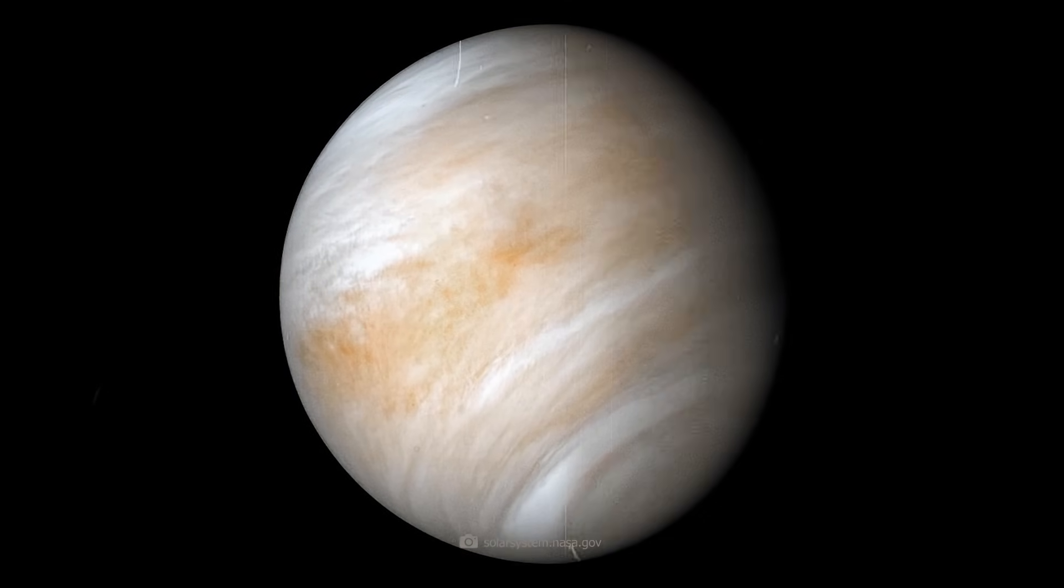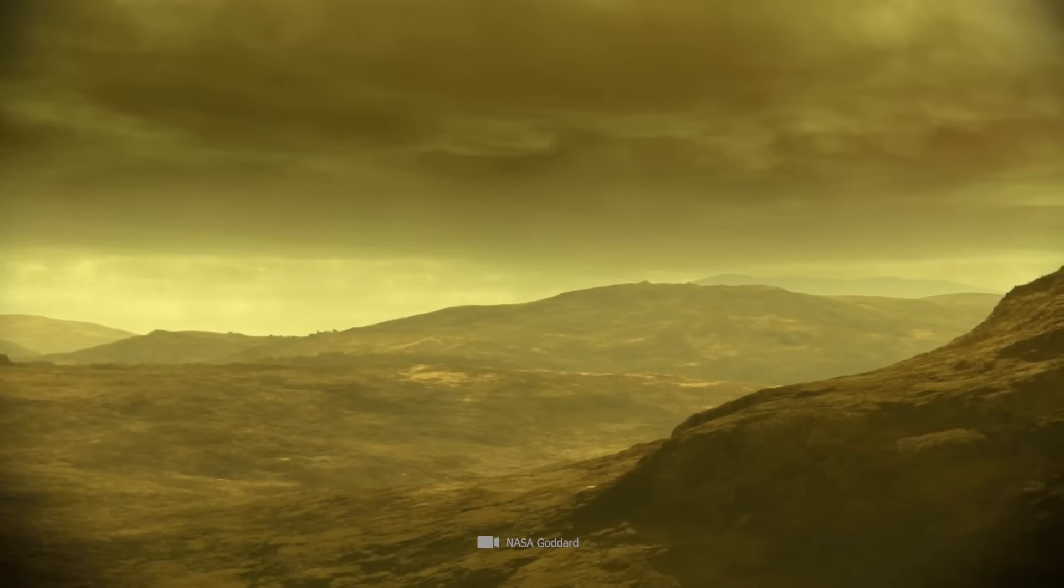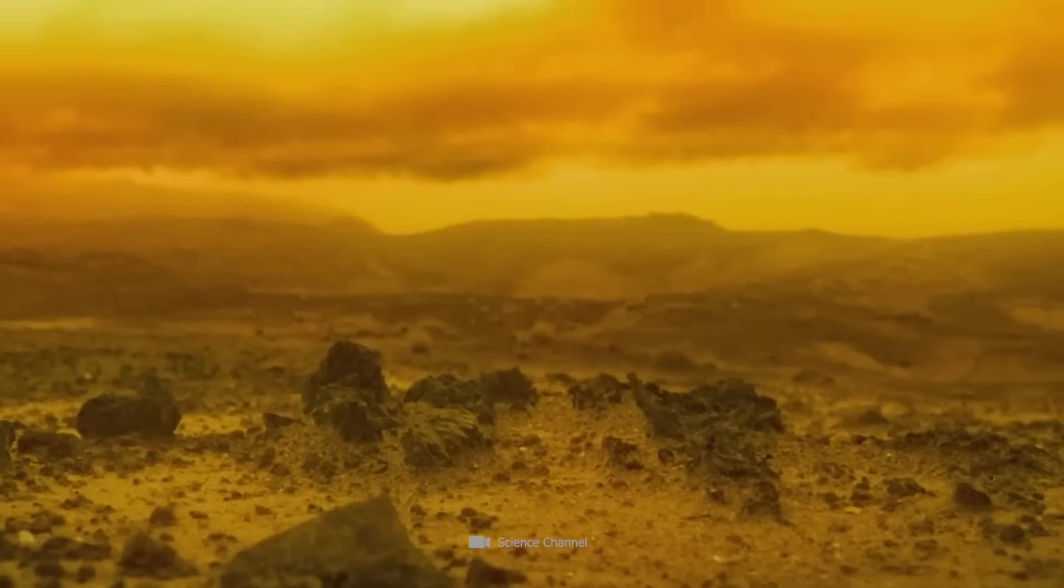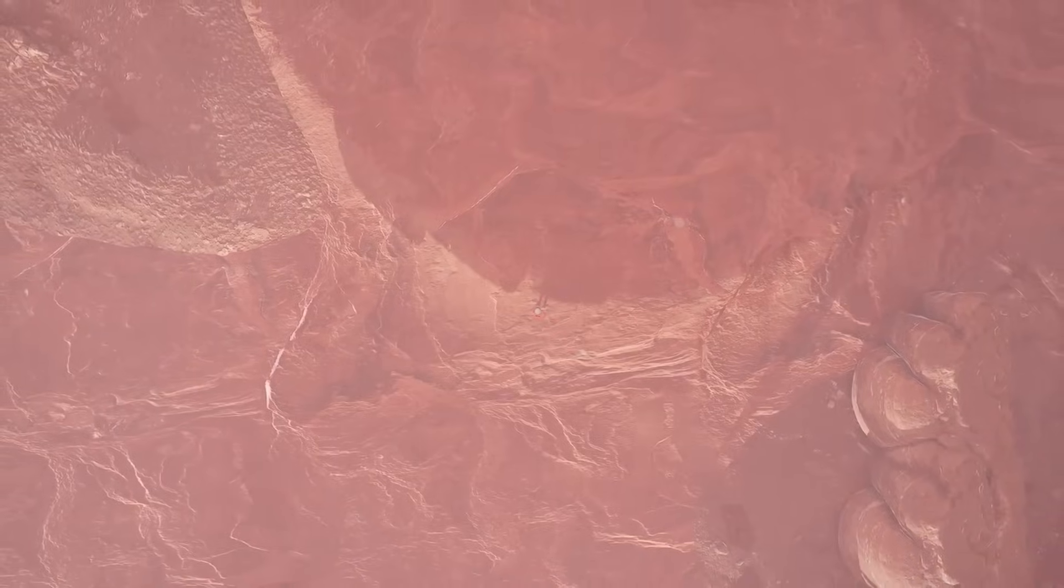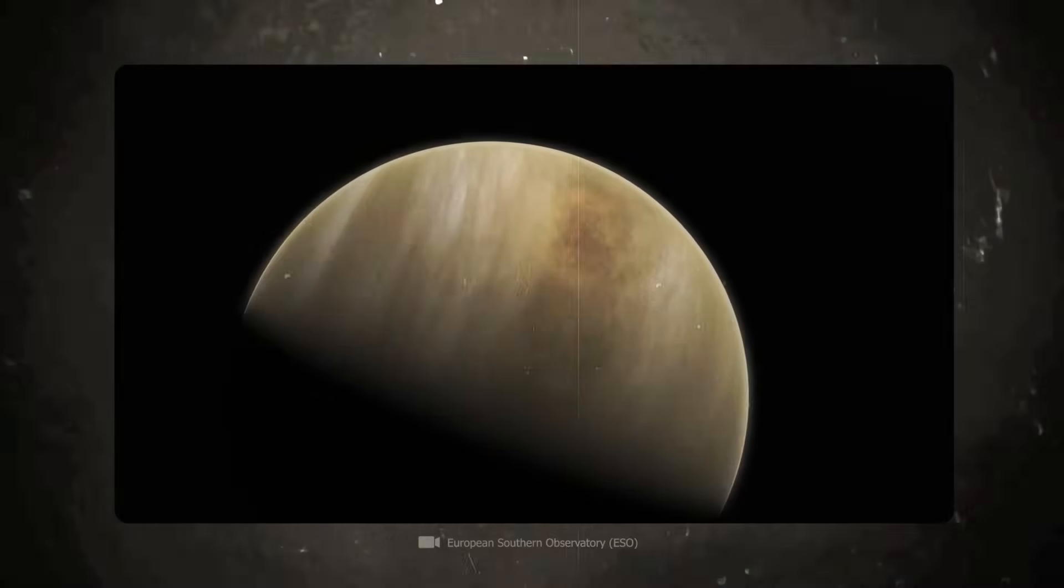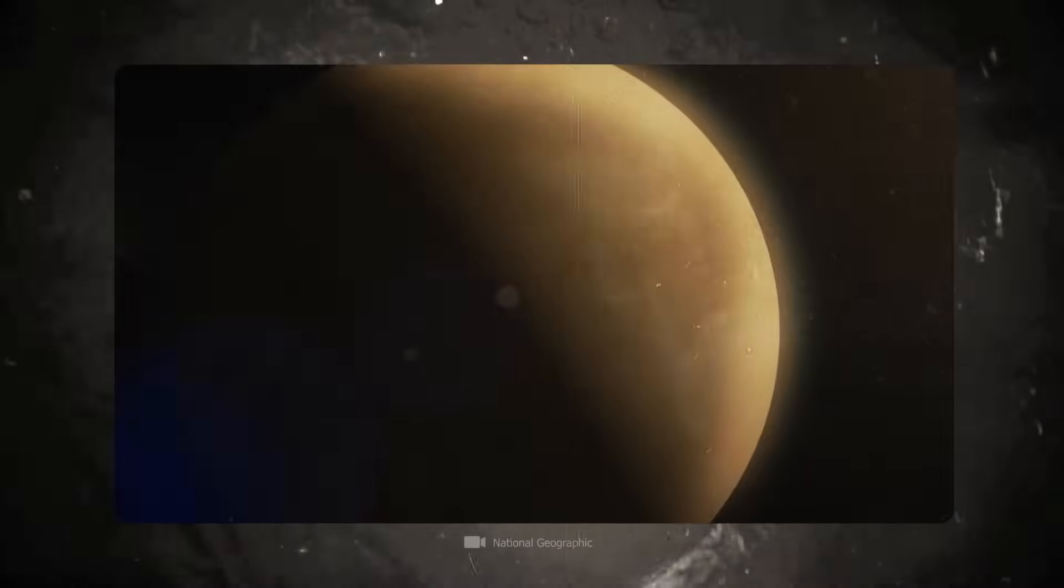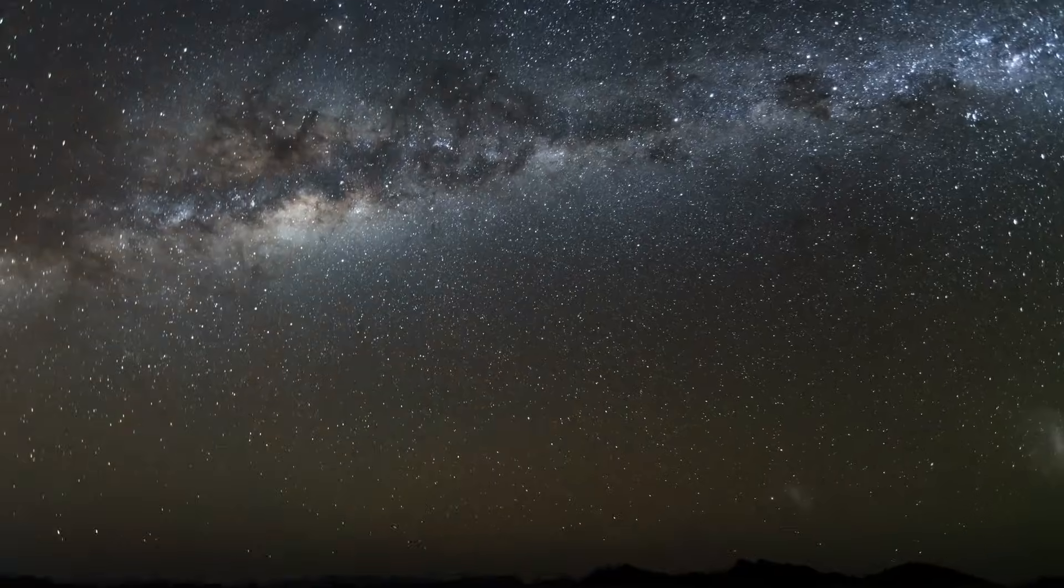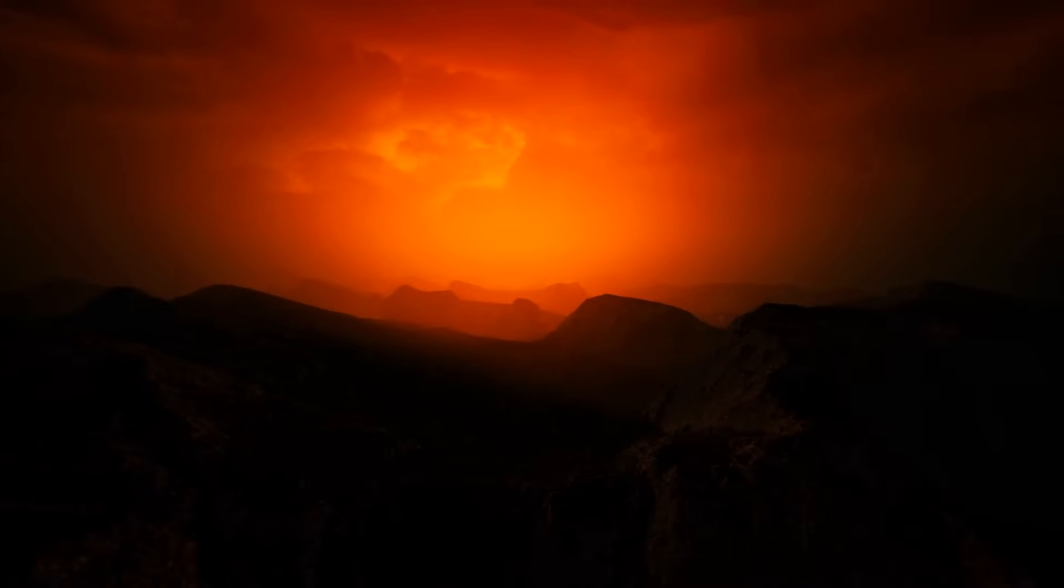No other planet is shrouded in such a thick layer of clouds and no other planet in the solar system is so hot, toxic and seemingly inhospitable. Nevertheless, life could exist there. A sensational discovery of biomarkers in the planet's atmosphere indicates exactly that. Could it be that the simplest forms of life have survived the stark transformation of Venus into a blazing furnace?